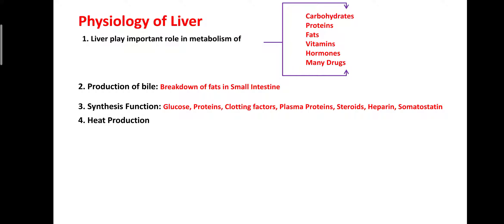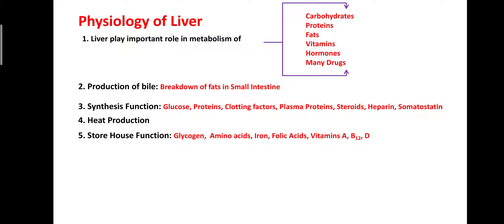The liver plays an important role in the regulation of body heat, because metabolism produces heat that helps regulate body temperature. The liver also acts as a storehouse for glycogen — that is, excess glucose stored in the form of glycogen — as well as amino acids, iron, folic acid, vitamin A, B12, and D.